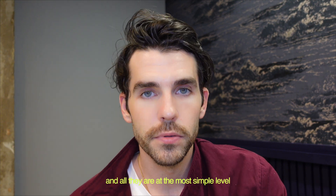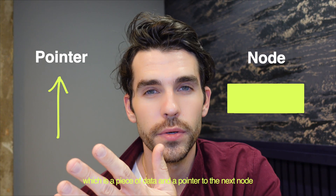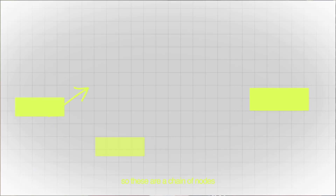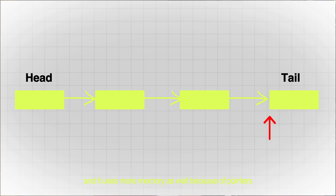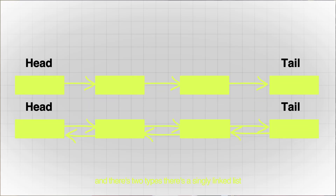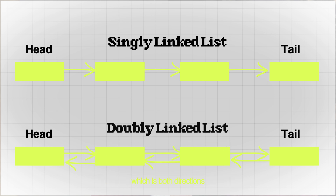As I go through this list of data structures, they're going to get more and more complex. But do not overthink linked lists — they're actually really simple. At the most simple level, a linked list is just a node, which is a piece of data and a pointer to the next node. They're a chain of nodes where each node points to the next. The first node is the head and the last node with no next is the tail. They're slow to access items via an index and use more memory because of pointers, but they're really good for inserting and removing items quickly. There are two types: a singly linked list, which is one direction, and a doubly linked list, which is both directions.